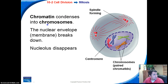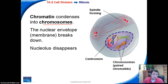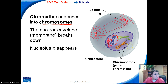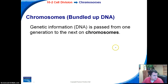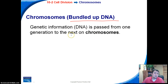Chromatin condenses into these things called chromosomes. All of these little X-shaped things are chromosomes. Chromatin and chromosomes both contain DNA; however, DNA doesn't usually exist as this X-shaped thing — it usually exists as a big mess of stuff. Another important thing that happens in prophase is that the nuclear membrane begins to break down and go away, and the nucleolus disappears. Genetic information — DNA — is passed from one organism to the other through generations on these things called chromosomes.